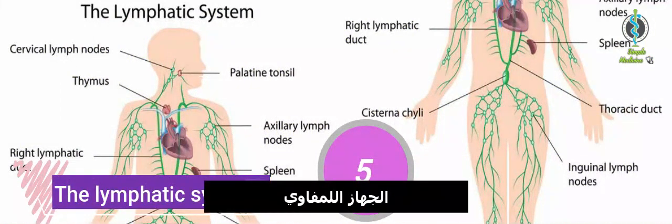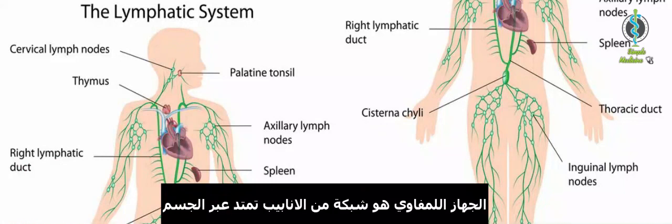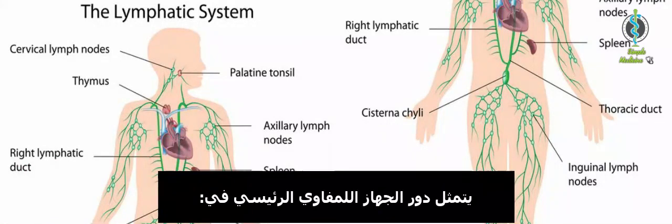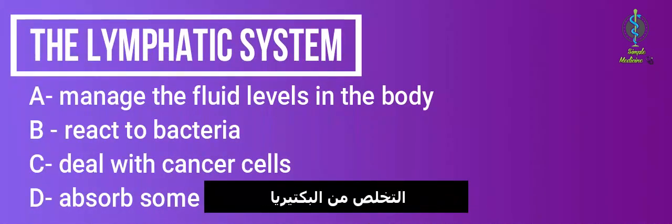Lymphatic system. The lymphatic system is a network of tubes throughout the body. The main roles of the lymphatic system are: manage the fluid levels in the body and react to bacteria.